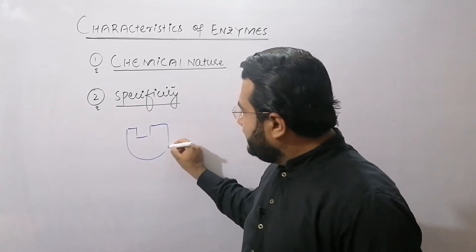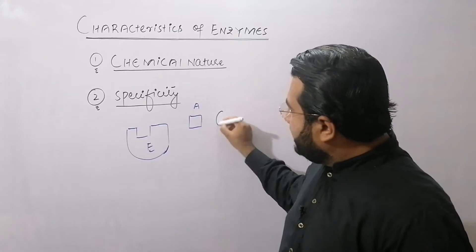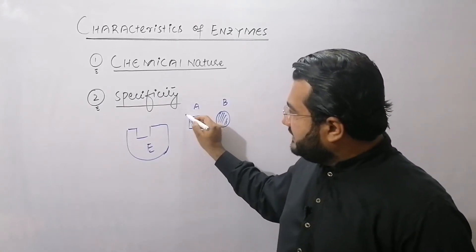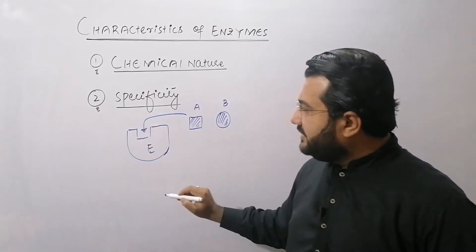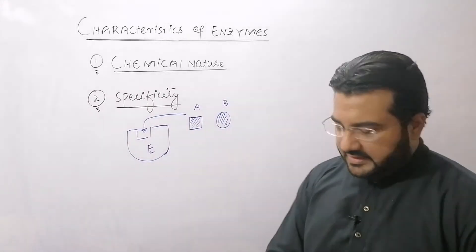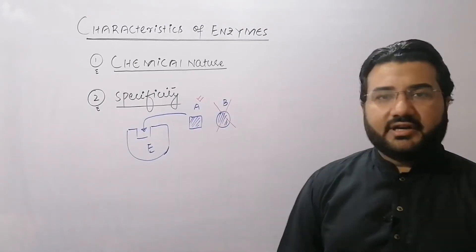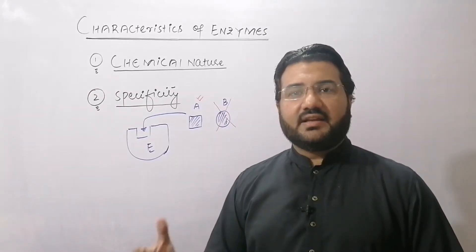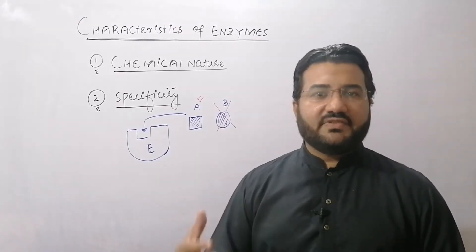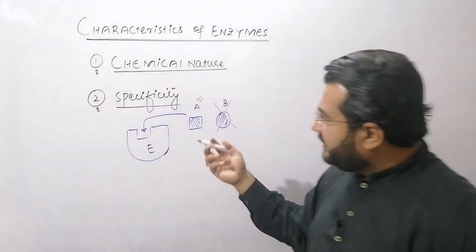Just like if this one is an enzyme, it has its own specific shape. If there are two molecules, A and B, you can judge that molecule A can fit into the active site of the enzyme — the active site being the place where the substrate attaches — while molecule B has a different shape and cannot attach. So this enzyme can convert molecule A into the product but cannot convert molecule B. Enzymes catalyze only one reaction or one type of closely related reactions, and the specificity is related to the specific shape of the enzyme molecules.